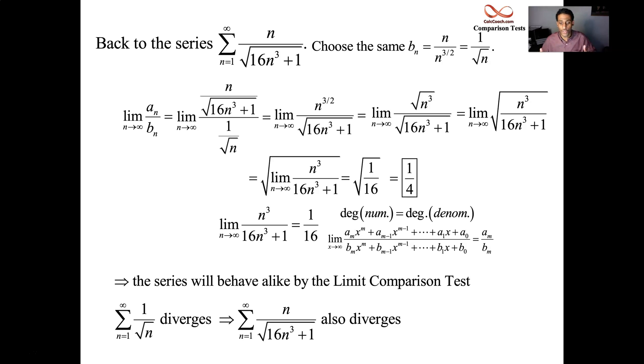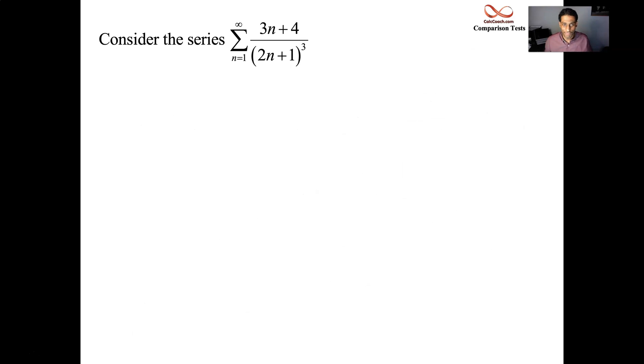That's our first use of the limit comparison test. Let's see another. 3n plus 4 on top of 2n plus 1 quantity cubed. What are we going to drop off? We're going to drop off the 4, we're going to drop off the 1. When we go get our b sub n, we'll be looking at 3n over 2n cubed, or just n over n cubed. So 1 over n squared. Our b sub n is the series of 1 over n squared. That's a p series, p equals 2. That's a convergent p series.